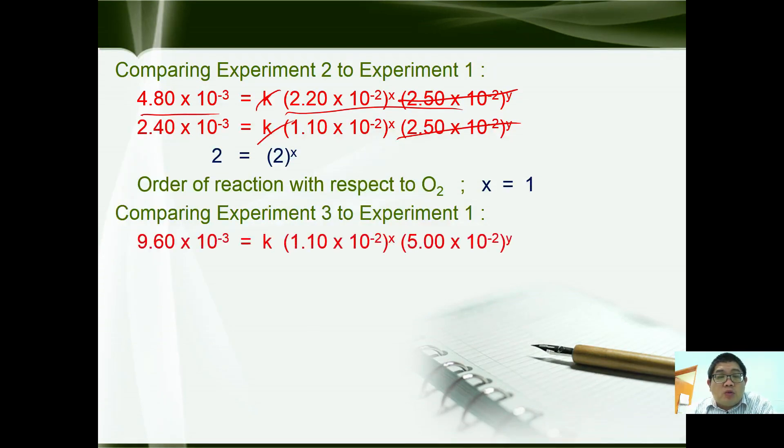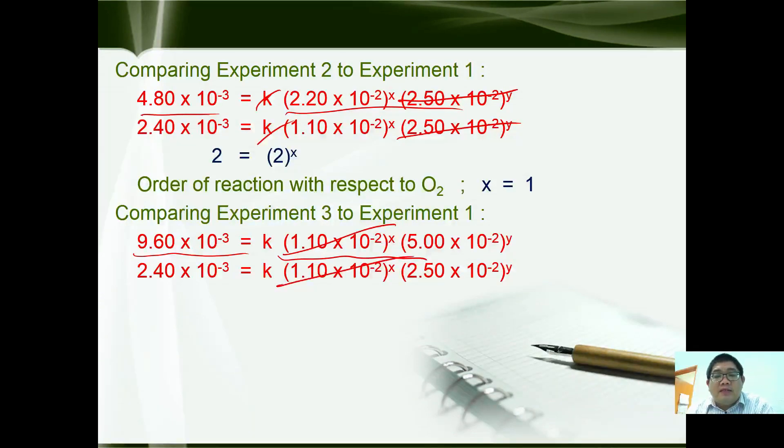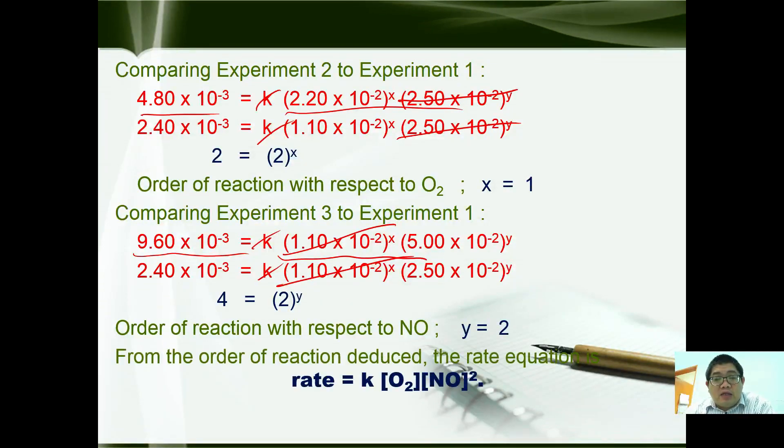When we compare between experiment 3 and 1, you have 9.6 × 10⁻³ over this one. Between 1.10 and 1.10 can be cancelled. K and K can also be cancelled. So you have 4 = 2ʸ. Therefore y equals 2. With this, we say that the order of the rate equation can be re-expressed as rate = k[O₂][NO]².